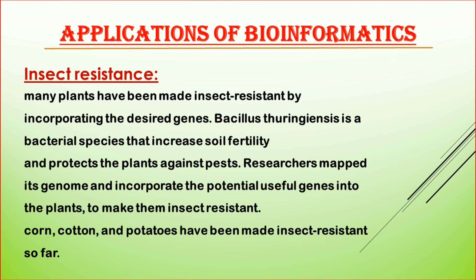Insect resistance. Many plants have been made insect-resistant by incorporating desired genes. Bacillus thuringiensis is a bacterial species that increases soil fertility and protects plants against pests. Researchers mapped its genome and incorporated potentially useful genes into plants to make them insect-resistant. Corn, cotton, and potatoes have been made insect-resistant so far.